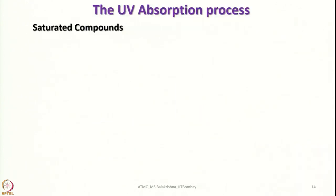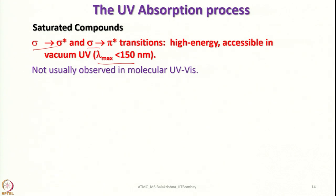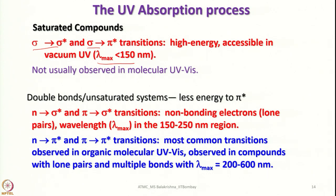Now let us look into UV absorption processes for saturated compounds. Saturated compounds show electronic transitions of σ→σ* and σ→π*. These are high-energy transitions accessible in vacuum, with λ_max less than 150 nm — not usually observed in molecular UV-visible. For double bonds and unsaturated systems there is less energy for 2π*, so what we see is n→σ* and π→σ* transitions. Non-bonding electrons or lone pairs give wavelengths in the range of 150–250 nm.